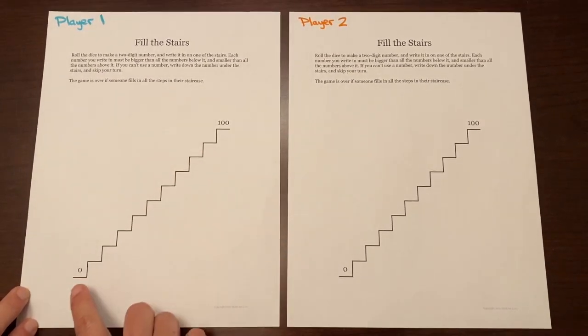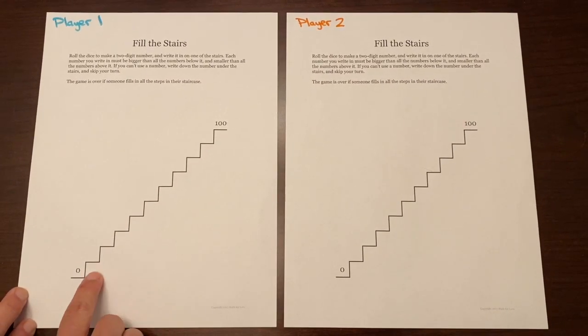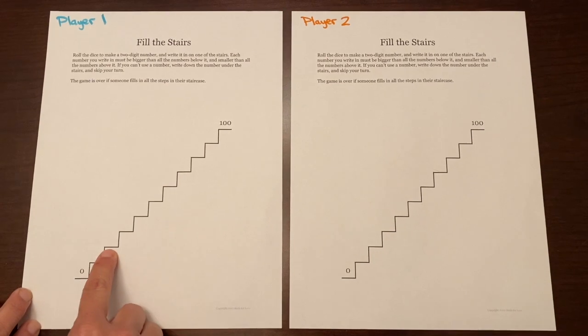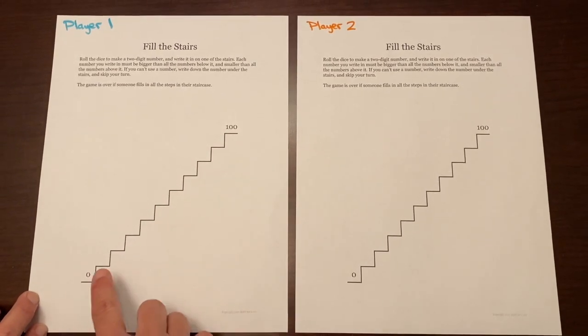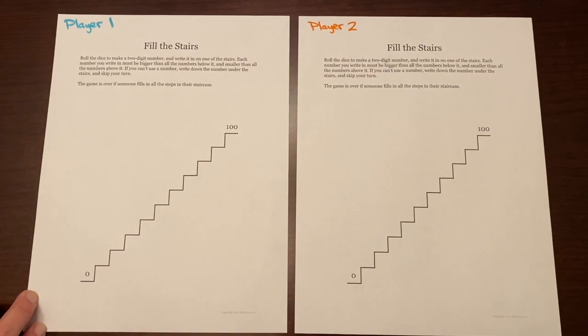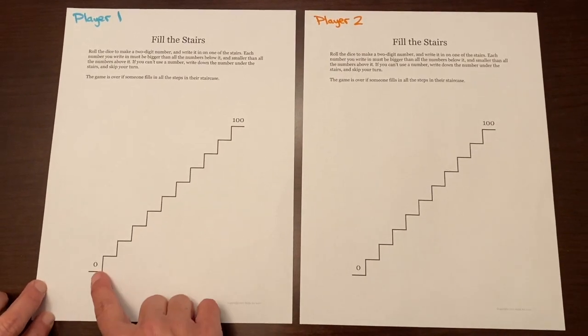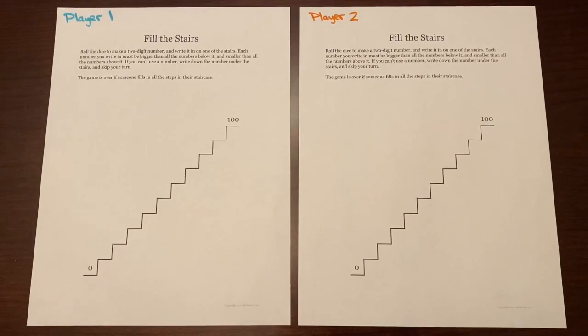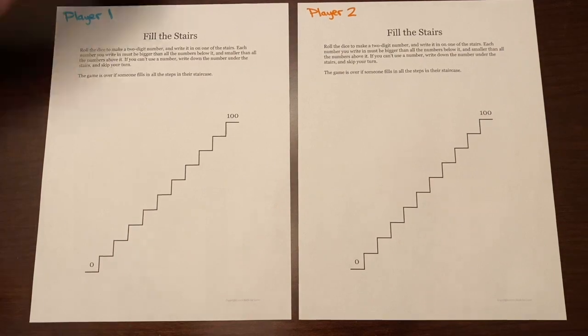As students fill this in, they do not need to make this the tens, the twenties, the thirties, the forties, the fifties and so forth. As they roll their dice, they're going to determine where they want to place their number on the staircase, and as long as it is in order from zero to 100, they're good. You can play this game with two dice, you can also use playing cards, and you can actually also use dominoes.